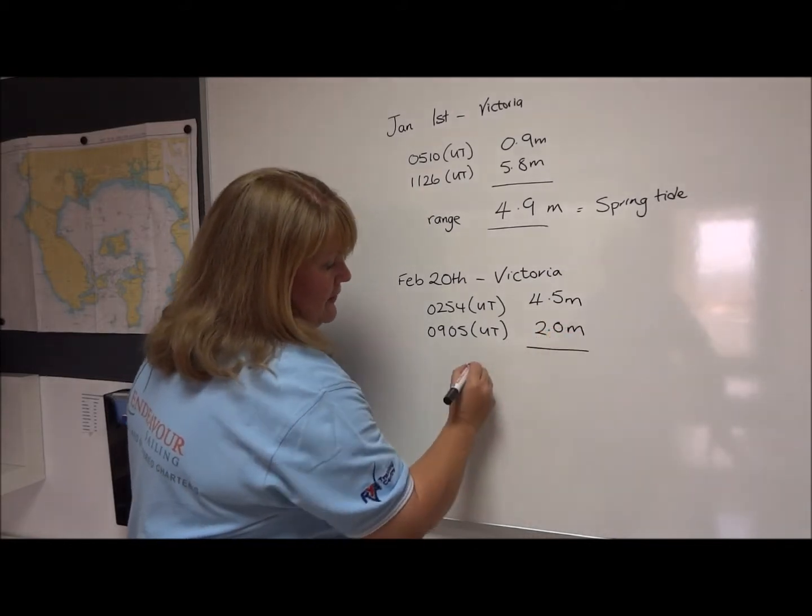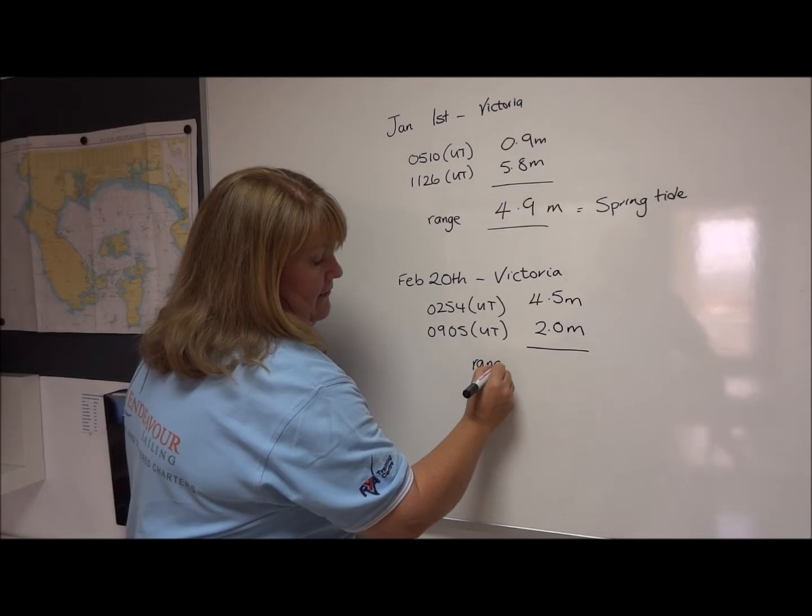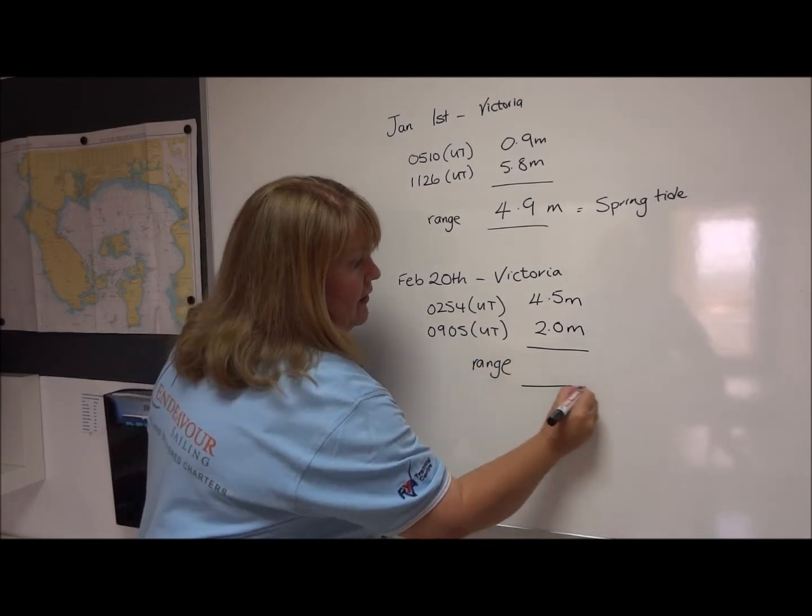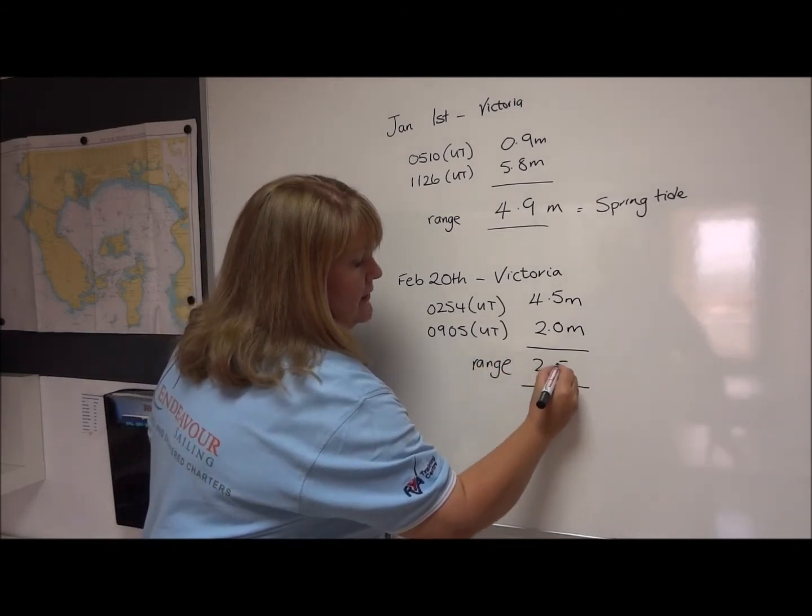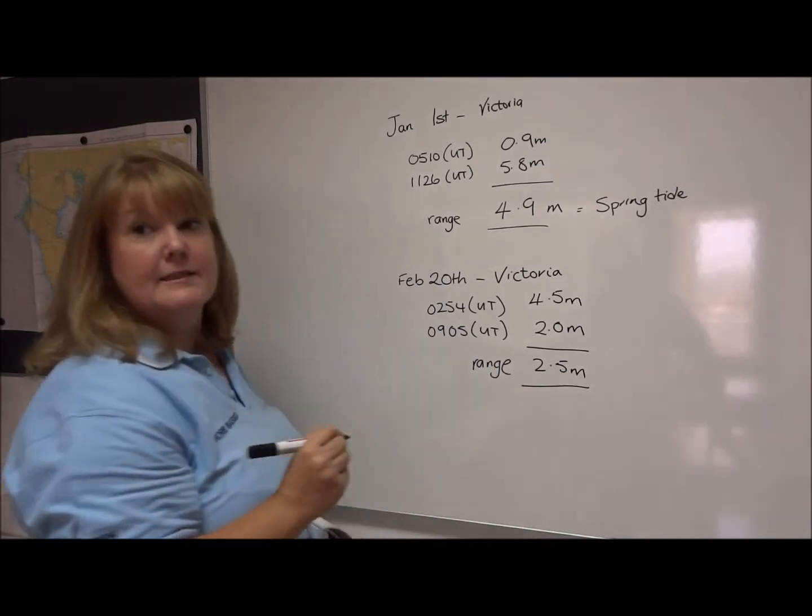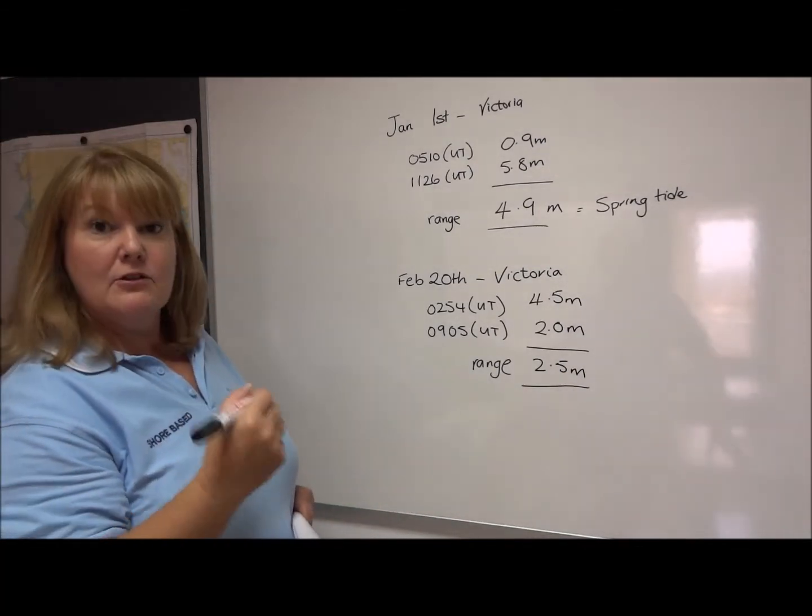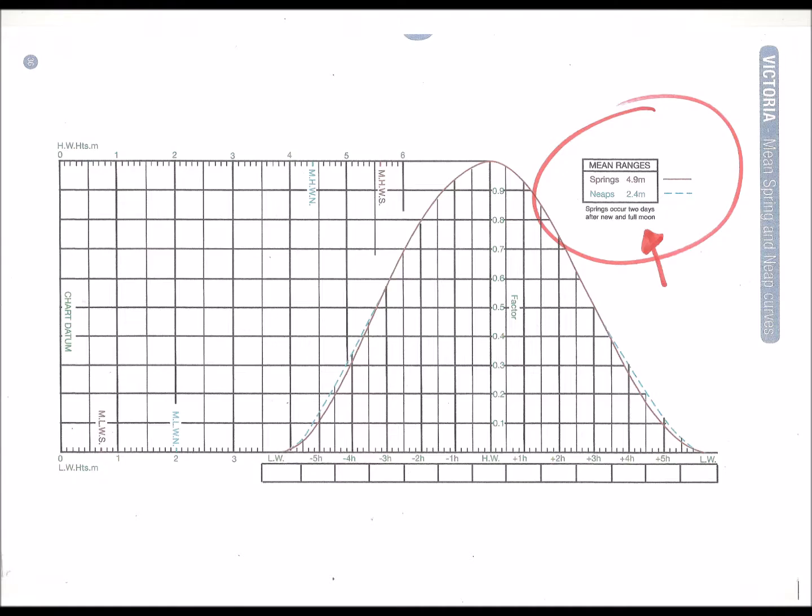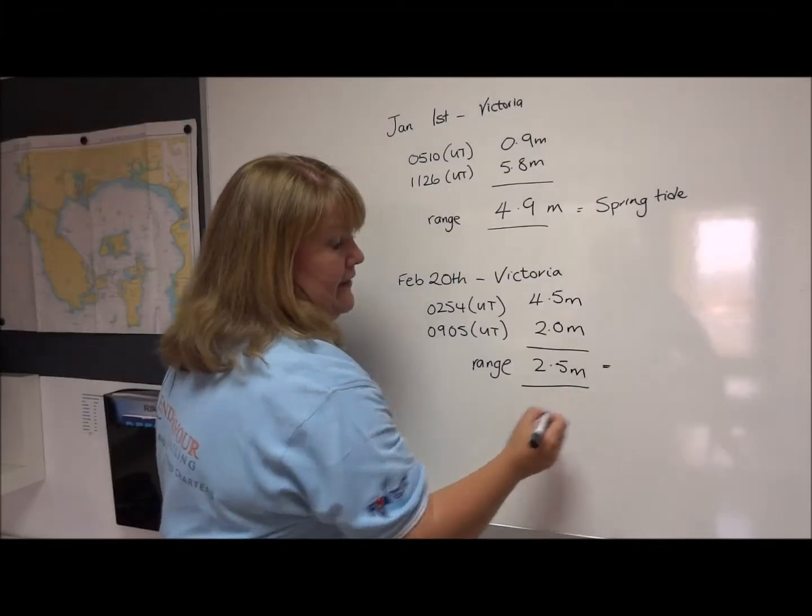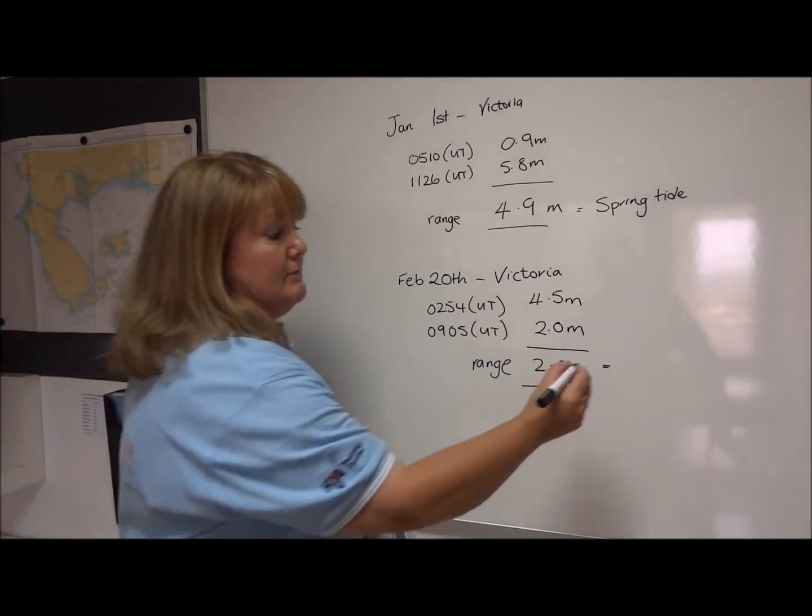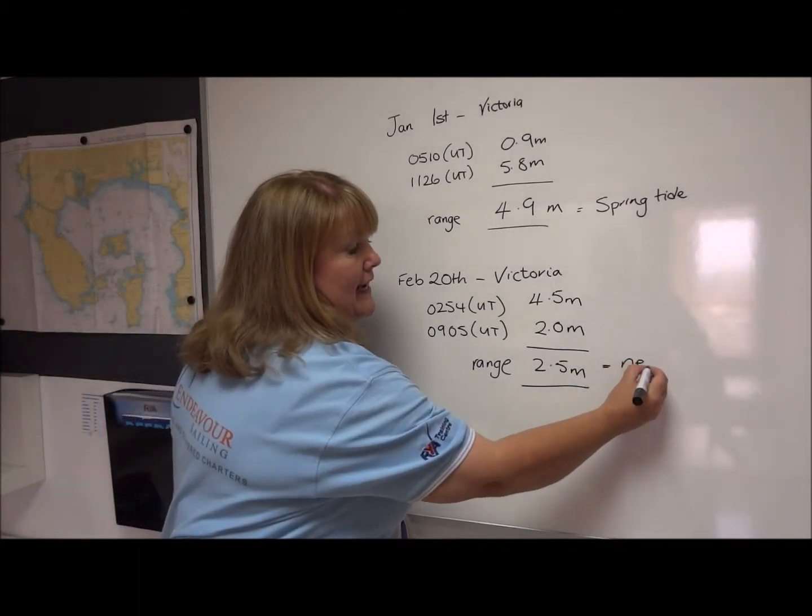So therefore today we have a range of 2.5 metres. So if we go back to that little graph again, that shows that 2.5 metres means we are on a neap tide.